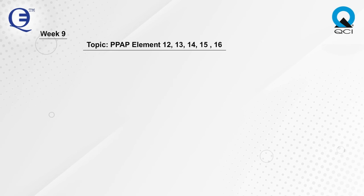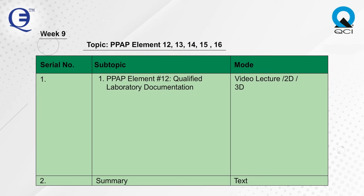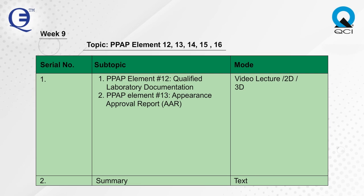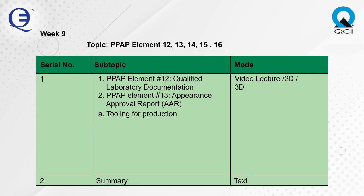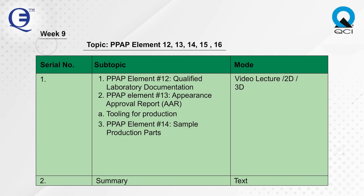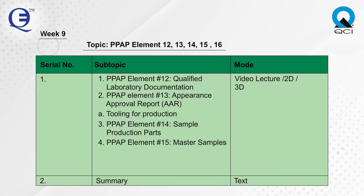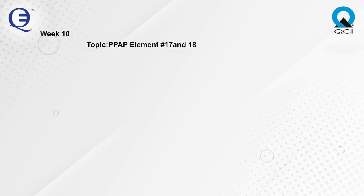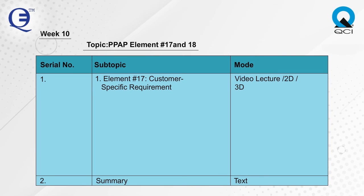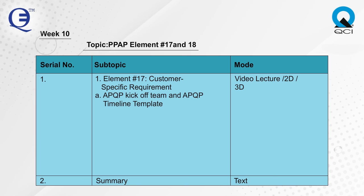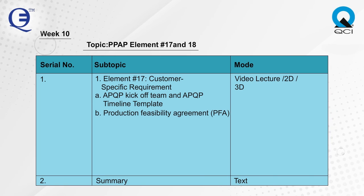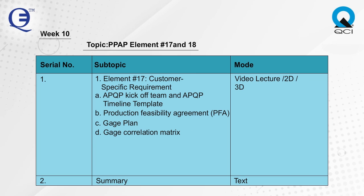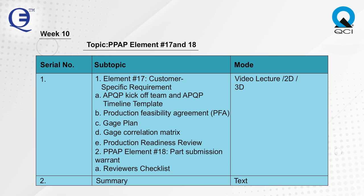Week 9 covers PPAP Elements 12 through 16: Element 12 Qualified Laboratory Documentation, Element 13 Appearance Approval Report (AAR) and tooling for production, Element 14 Sample Production Parts, Element 15 Master Samples, and Element 16 Checking Aids. Week 10 covers Elements 17 and 18: Element 17 Customer Specific Requirements including APQP kickoff team, APQP timeline template, Production Feasibility Agreement, Gauge Plan, Gauge Correlation Matrix, and Production Readiness Review. Element 18 covers Part Submission Warrant and a reviewer's checklist.